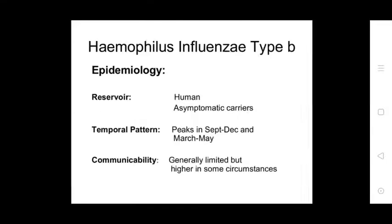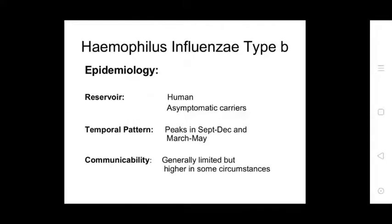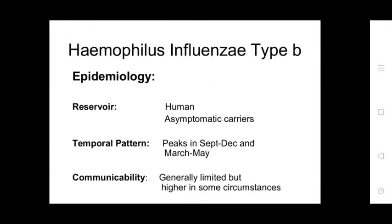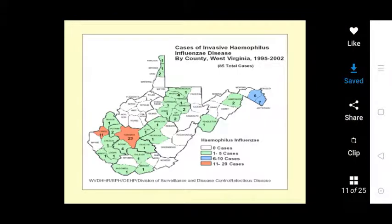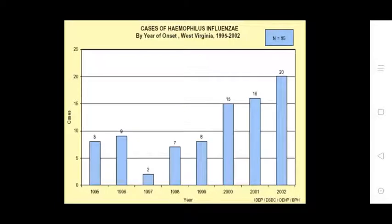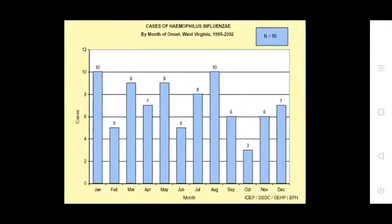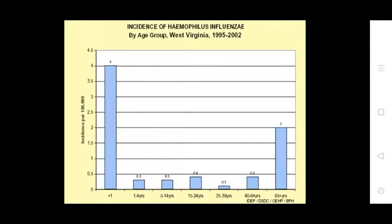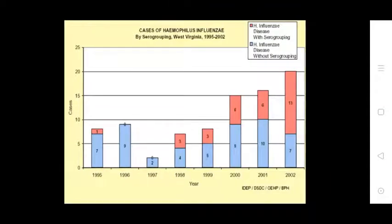Epidemiology: reservoir is human asymptomatic carriers. Temporal pattern peaks in late fall and May. Communicability is generally limited but higher in some circumstances. Cases of invasive Haemophilus influenzae disease in West Virginia from 1995–2002 totaled 85 cases, with data on onset by year, month, and serogroup.